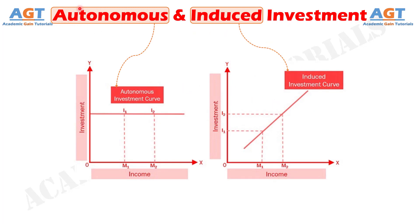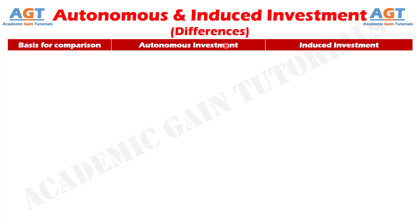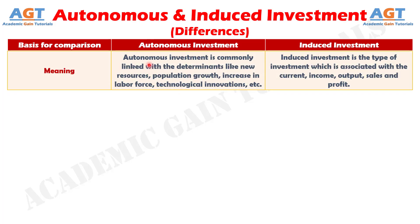Difference Number 1: Autonomous investment is called so because it is independent of the national income. On the other hand, induced investment is related to the changes in national income. Autonomous investment means an investment which remains unaffected by the changes in the level of income, rate of interest, and rate of profit. Induced investment is one which is positively related to the level of income, output, and profit.